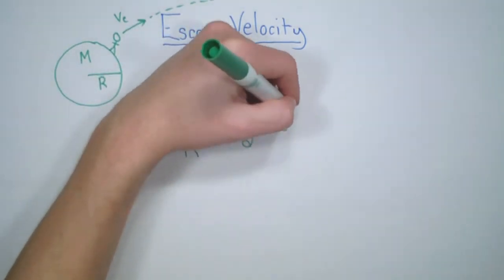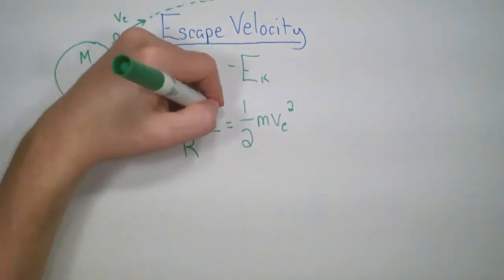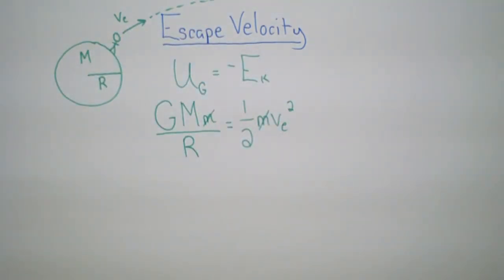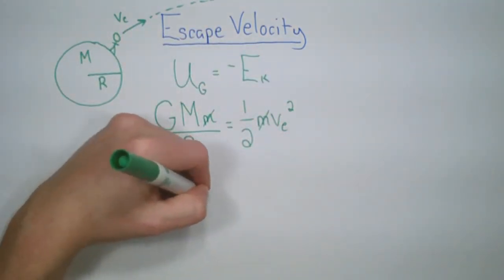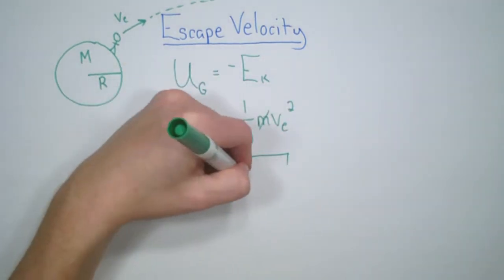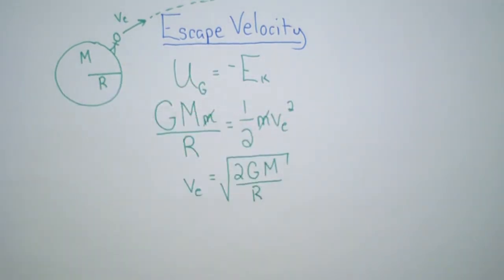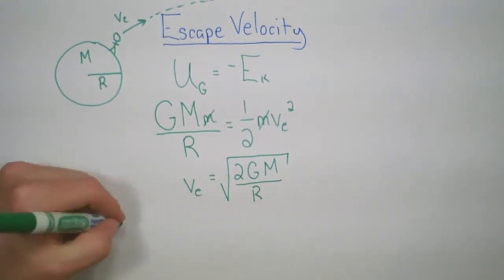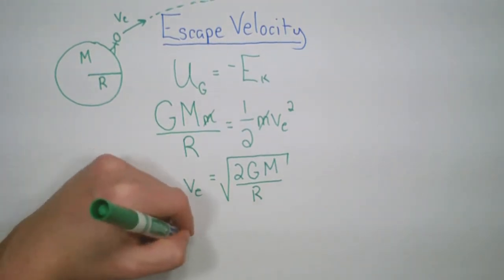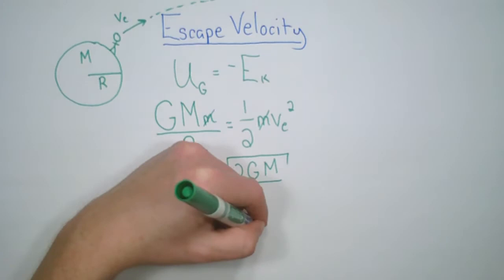And so when we set that up, what we're able to do is we're able to see that the mass of the object cancels. And then we can solve for v. And what we get is that we're going to have the square root of 2g mass of the object over the planetary radius, assuming we start on the planet. And if we look at the escape velocity for Earth, we're dealing with about 11 kilometers per second.